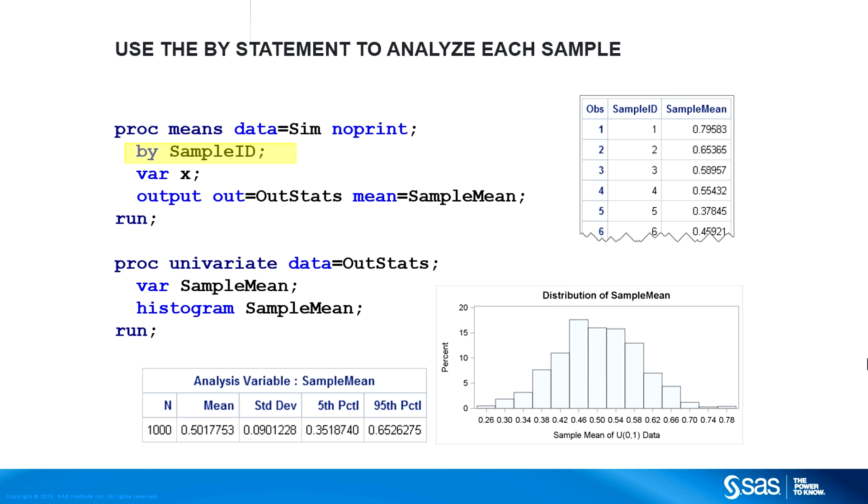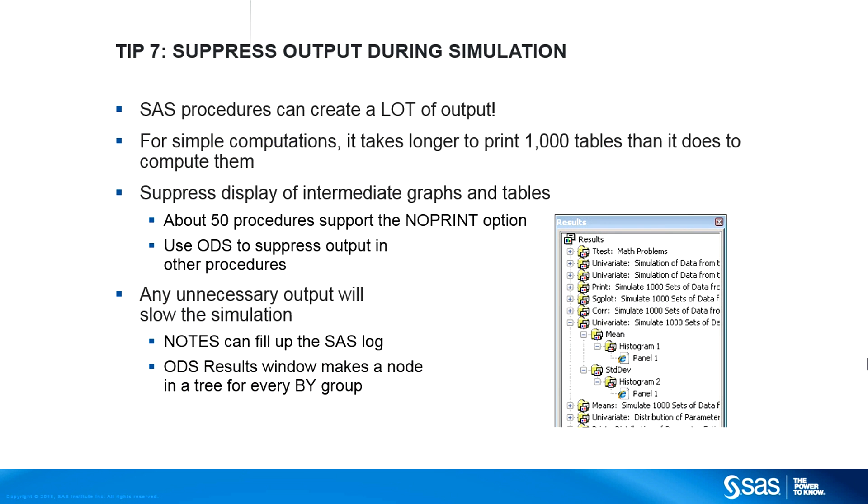The distribution of those sample means approximates the sampling distribution of the mean for samples of size 10. Notice that the means procedure uses the NO PRINT option to suppress the display of 1,000 tables. You don't want to view these tables, so why even create them? Instead, the OUTPUT statement writes the 1,000 statistics to an output data set. That, in fact, is tip number seven.